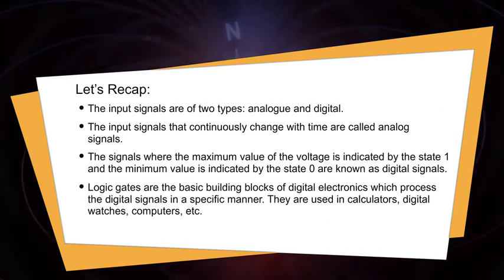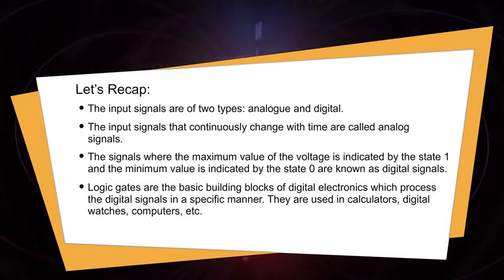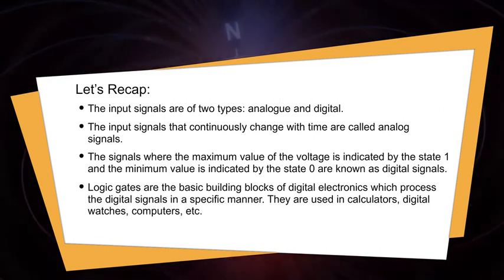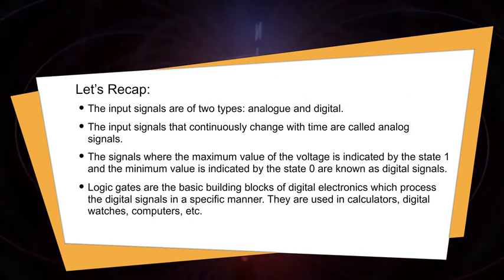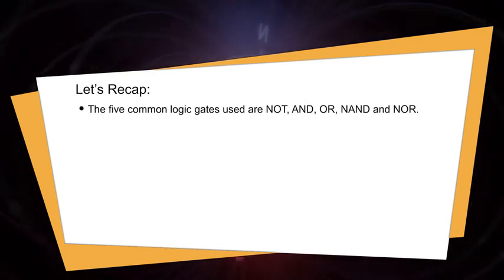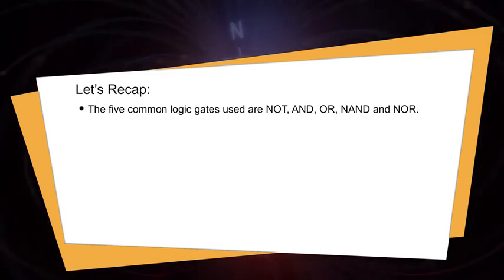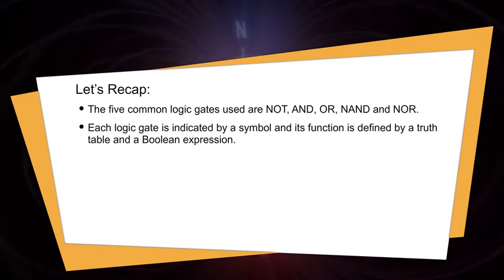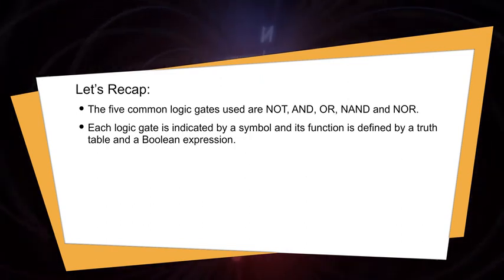Logic gates are the basic building blocks of digital electronics, which process digital signals in a specific manner. They are used in calculators, digital watches, computers, etc. The five common logic gates are NOT, AND, OR, NAND, and NOR. Each logic gate is indicated by a symbol, and its function is defined by a truth table and a boolean expression.